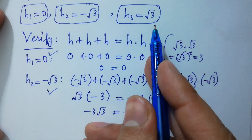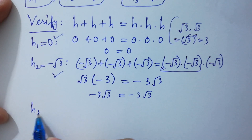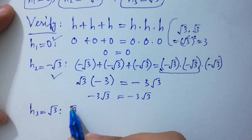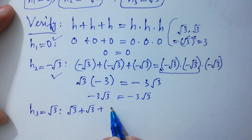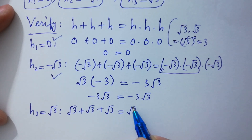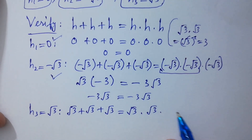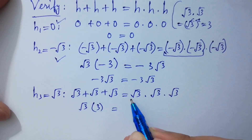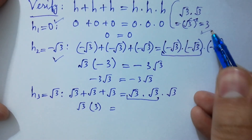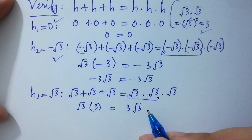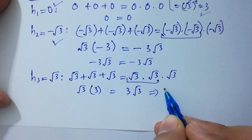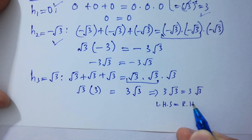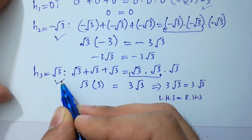If we put h₃ equal to plus √3, we get √3 plus √3 plus √3 equal to √3 times √3 times √3. Factoring √3 on the left gives 3. On the right, √3 times √3 equals 3, so we have 3√3 equal to 3√3 — left hand side equals right hand side, so h₃ equal to √3 is also correct.